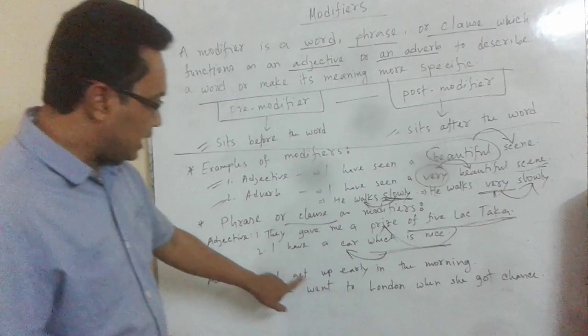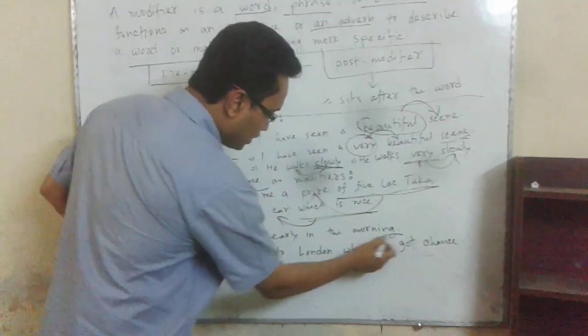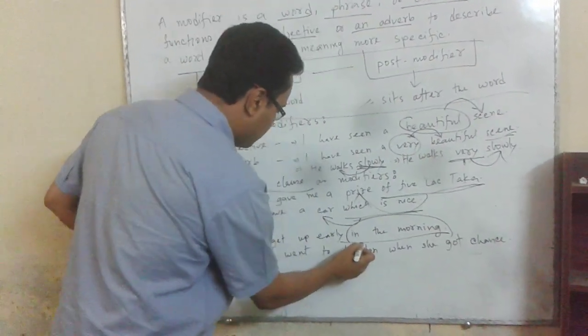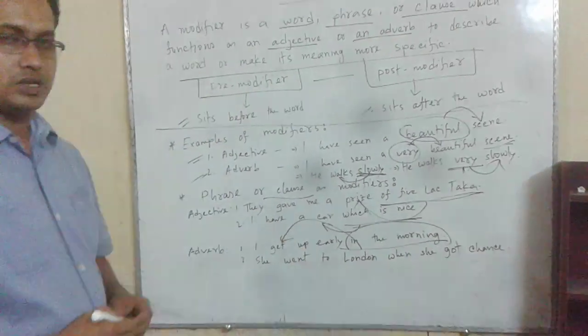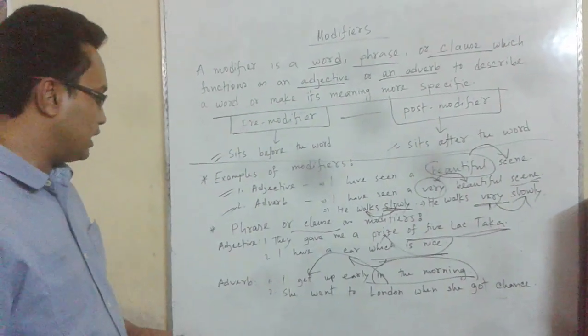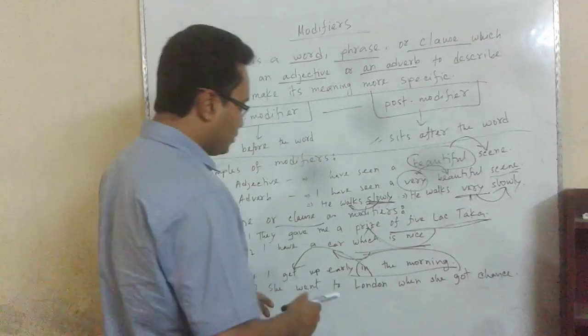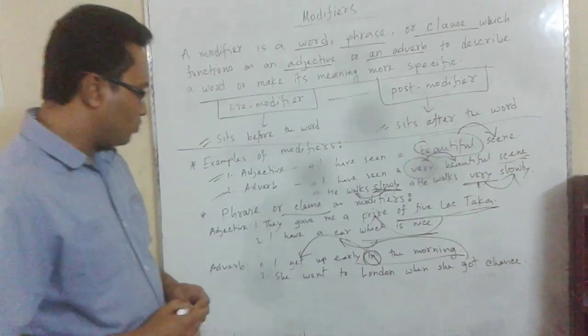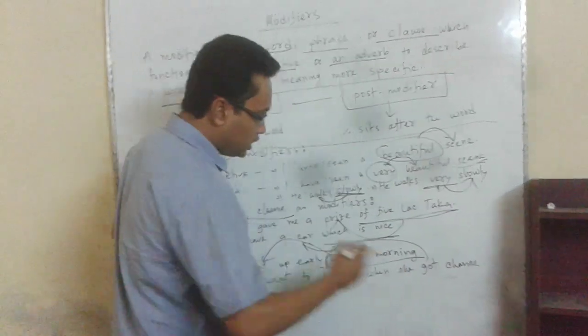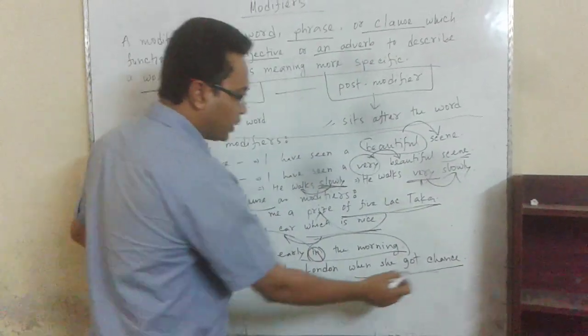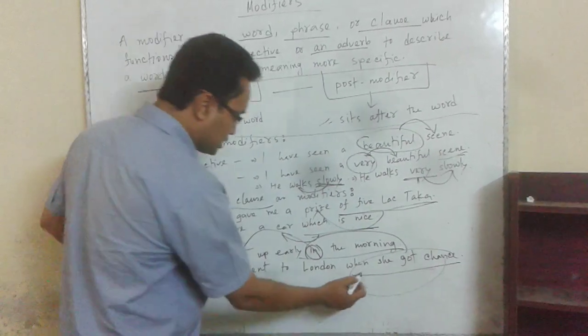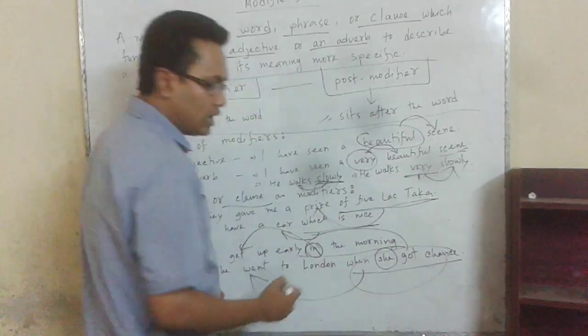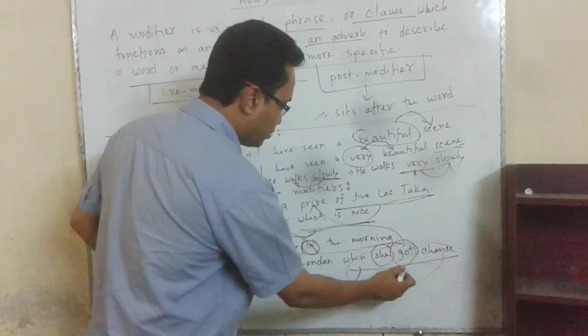I get up early in the morning. In the morning is a phrase modifying get up. I went to London when she got class. When she got class is a clause with subject and predicate, an adverb clause modifier.